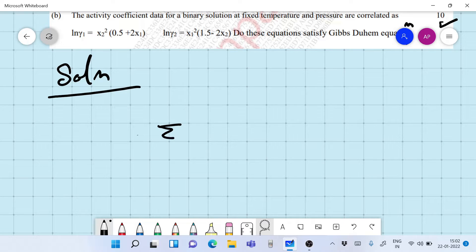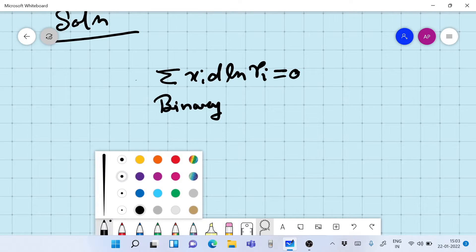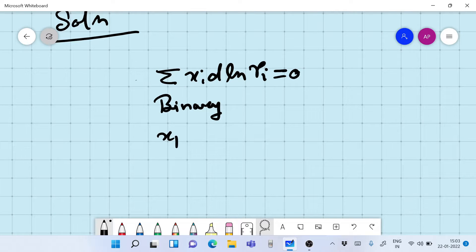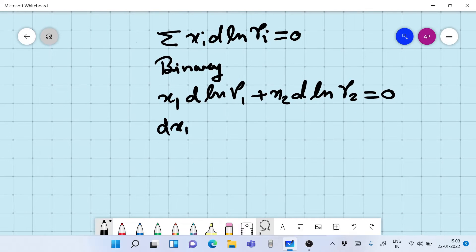The Gibbs-Duhem equation is summation xi d ln gamma i equals 0. For a binary solution, it can be written as x1 d ln gamma 1 plus x2 d ln gamma 2 equals 0. We divide this by dx1 and therefore we get x1 d ln gamma 1 by dx1 plus x2 d ln gamma 2 by dx1 equals 0.